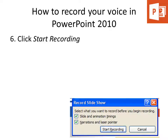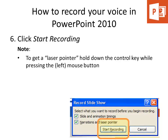I do want to point out one feature here, which is the Laser Pointer — a very neat PowerPoint feature. If you hold down the Ctrl key while pressing the mouse button, you get this Laser Pointer, which you can use to highlight items on your screen. This will get recorded in the slideshow.